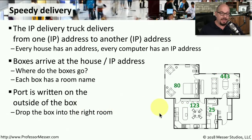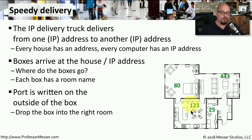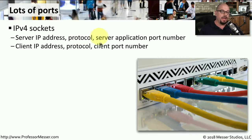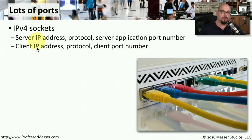For example, a box of data arrives at a server with many different services running. Some data goes to port 80, some to port 443, other data to port 123, and other services provide access over port 25. Putting these together, we have an IP socket: a server's IP address, a protocol such as TCP or UDP, and a port number. The same applies on the client side — a client IP address, a protocol, and a client port number — all together forming IP version 4 sockets.